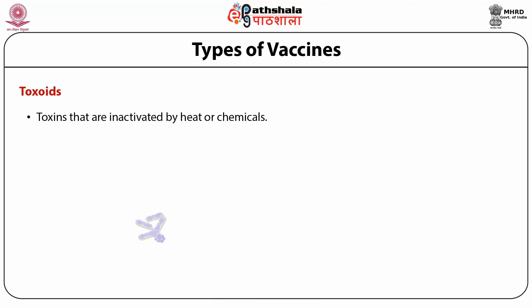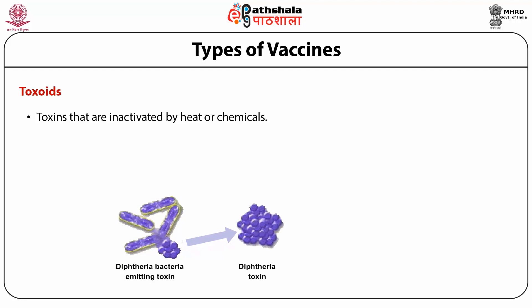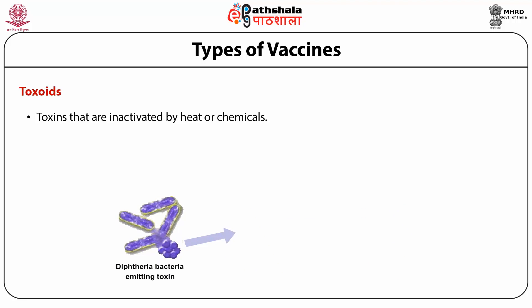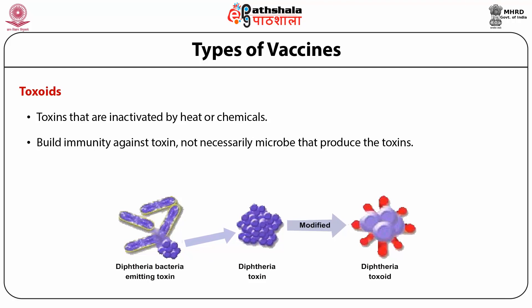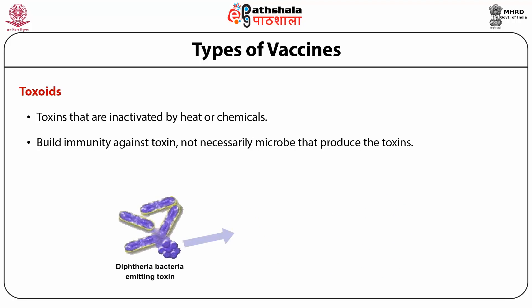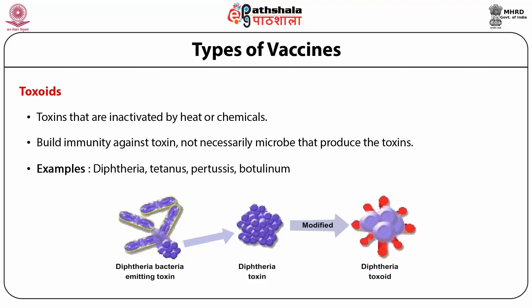Toxoids are toxins that are inactivated by heat or chemicals. Some microorganisms like diphtheria, tetanus, and pertussis secrete toxins which are the reason for pathogenesis, rather than the microorganism itself. These toxins are used as antigens in vaccines known as toxoids. When you inject a toxoid, immunity is built against the toxin — not necessarily against the microorganism that produced it. Diphtheria, tetanus, pertussis, and botulinum are toxoid vaccines.